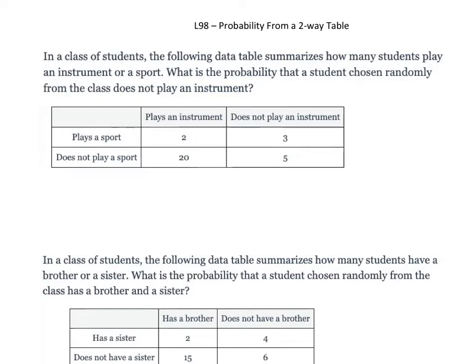So we're going to start with probability. Even in this probability, there's always data that's been collected from people. In our first problem, it says in a class of students, the following data table summarizes how many students play an instrument or a sport. The question asks: what is the probability that a student chosen randomly from the class does not play an instrument? This information could have come from a school computer or from surveying people.